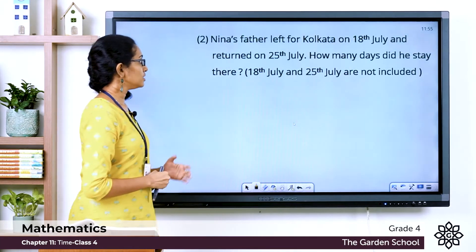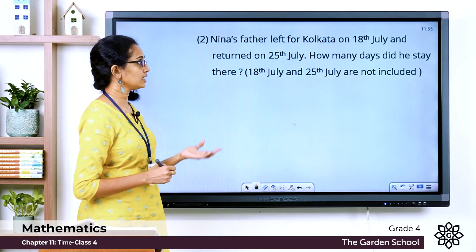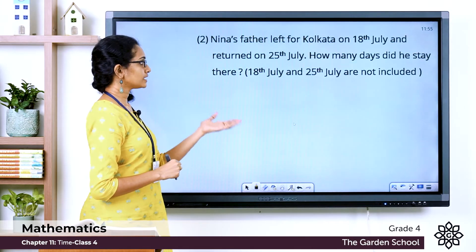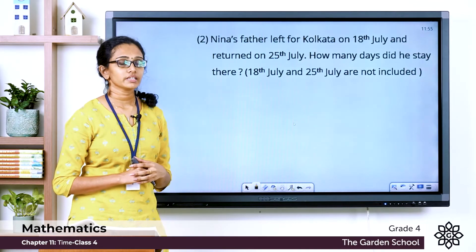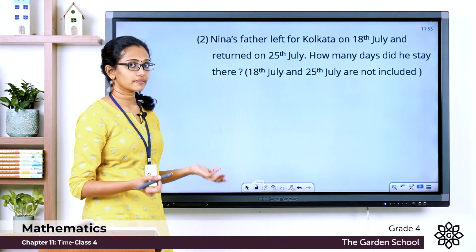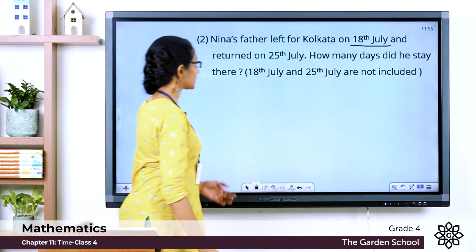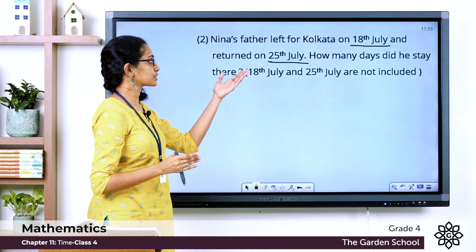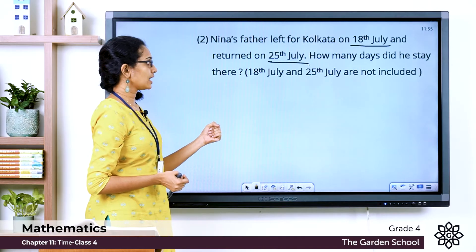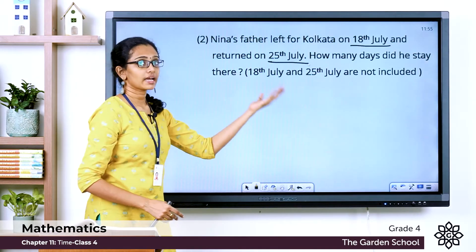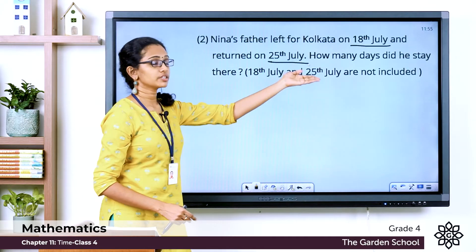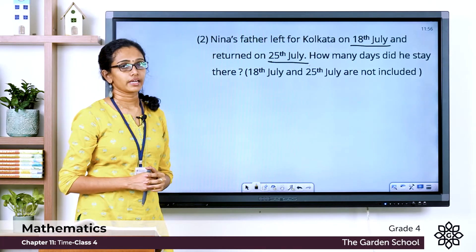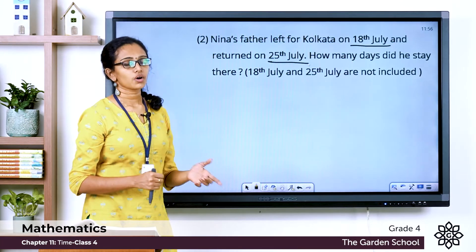Now the next example: Nina's father left for Kolkata on 18th July and returned on 25th July. How many days did he stay there? Nina's father left on the 18th of July and returned on the 25th of July. It is also mentioned that we have to exclude the departure and return days — 18th July and 25th July are not included — and then calculate the number of days he stayed in Kolkata.